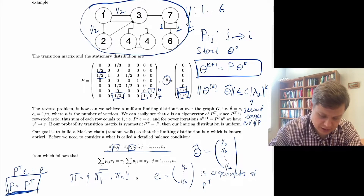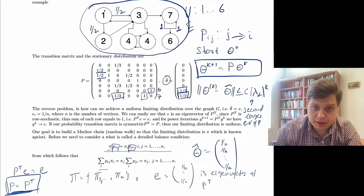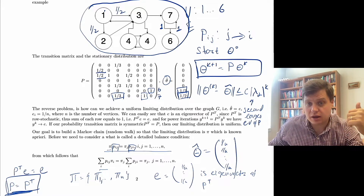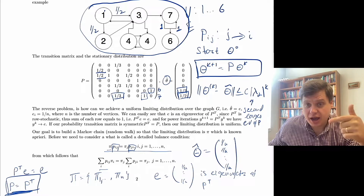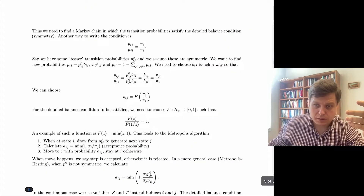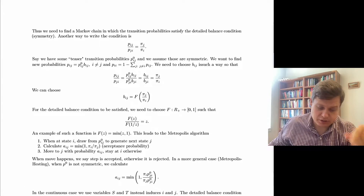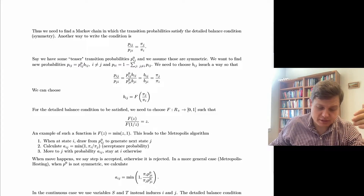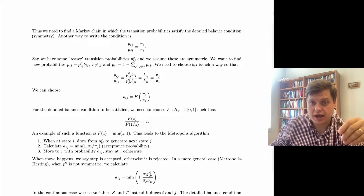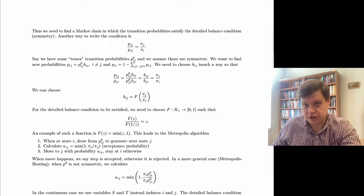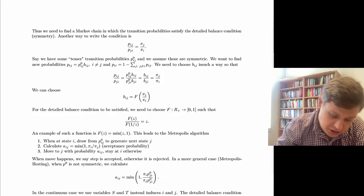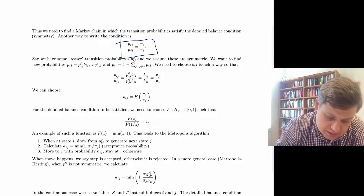You can rewrite the balance equation: if you sum across i on both sides, you get the sum of p_ij times pi_i on the left. On the right, pi_j does not depend on i, so it comes out of the sum, and the sum of p_ji across i equals one — so the right side equals pi_j. Doing the same summing across j's gives an equation for pi_i. Taking the ratio of both sides, the ratio of p_ij to p_ji equals the ratio of pi_j to pi_i.